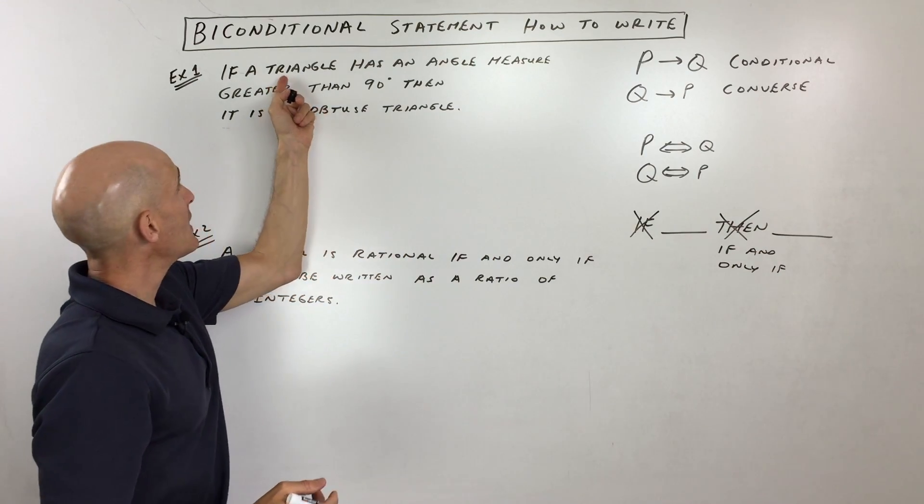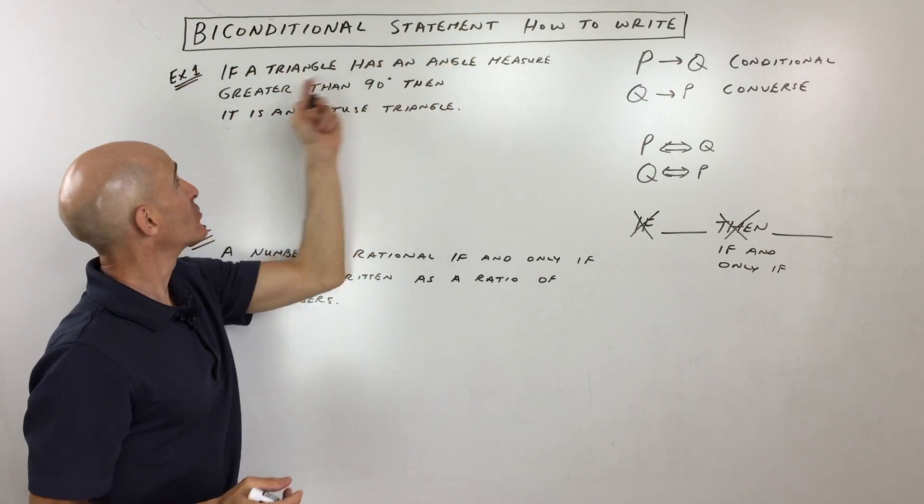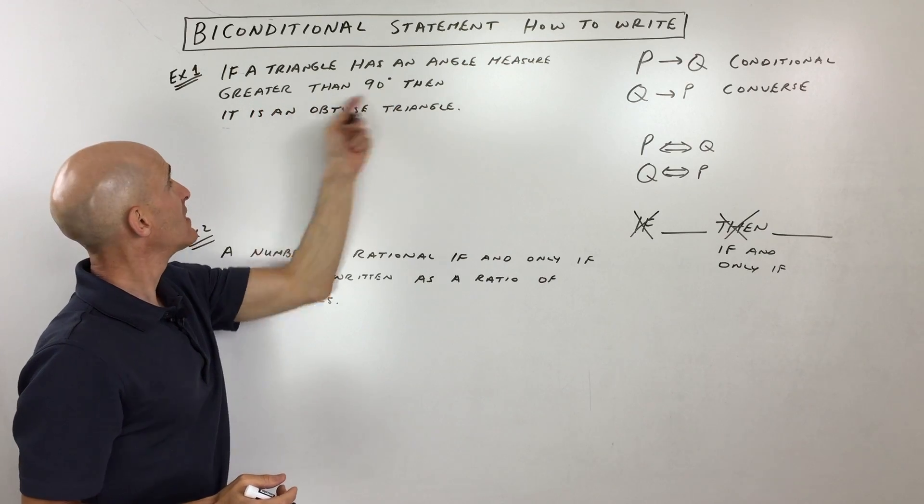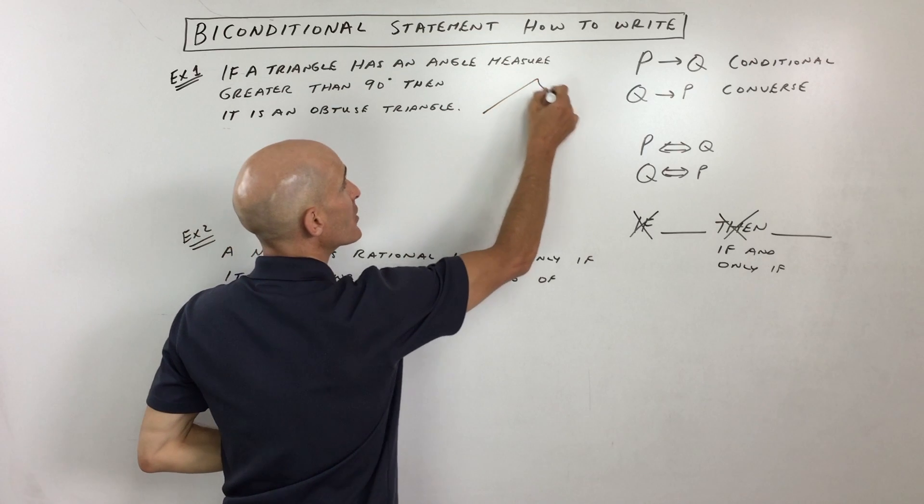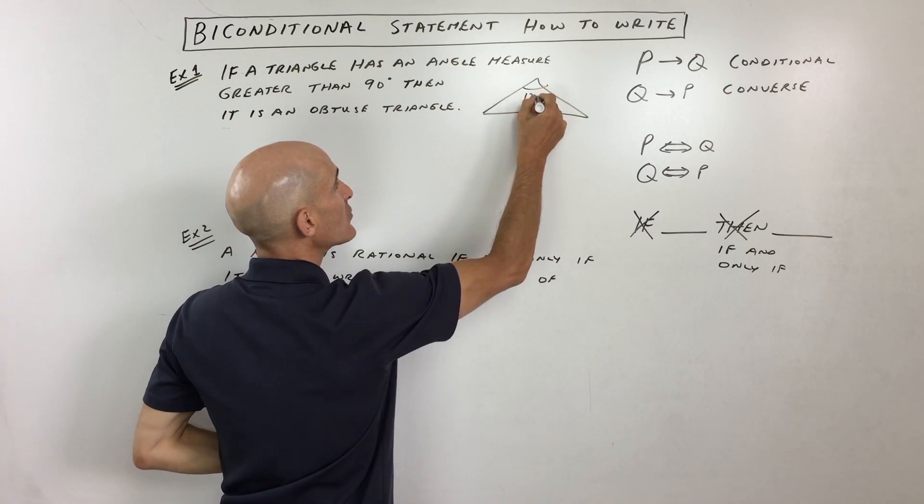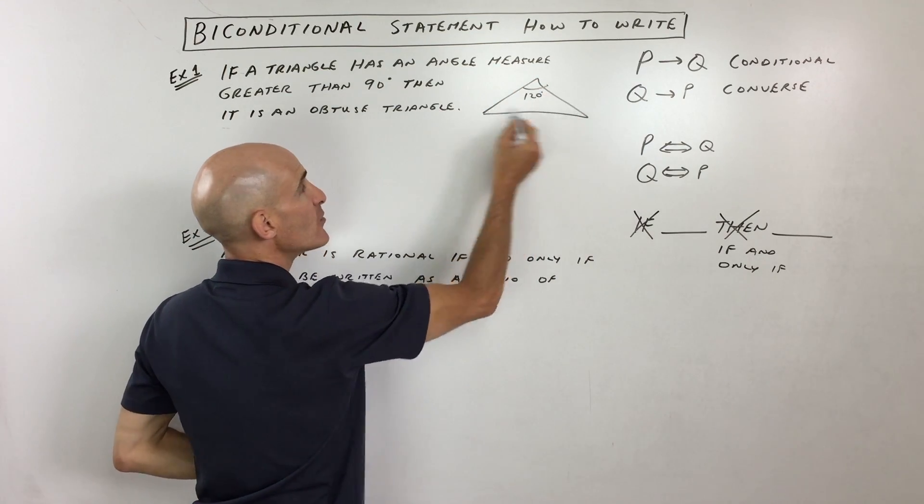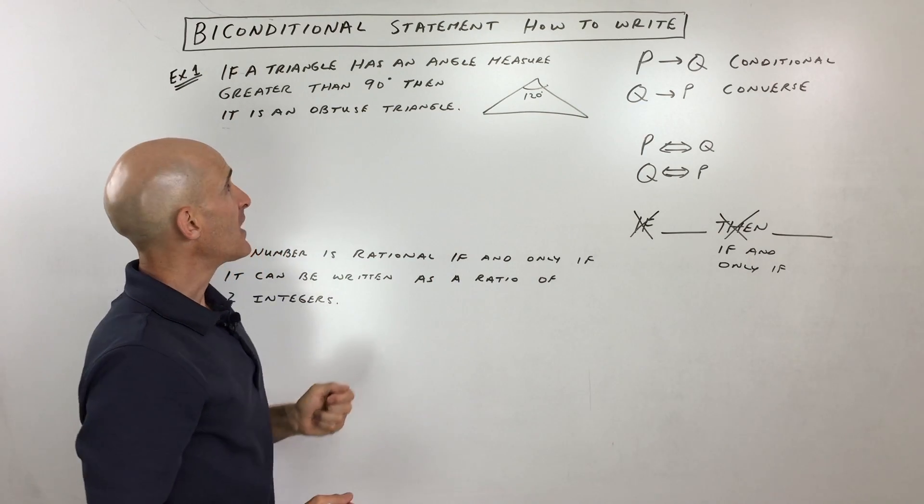Let's do an example. If a triangle has an angle measure that's greater than 90 degrees, then it is an obtuse triangle. Just a quick visual here. Say you have a triangle and this angle is 120 degrees, then we would call this triangle an obtuse triangle.